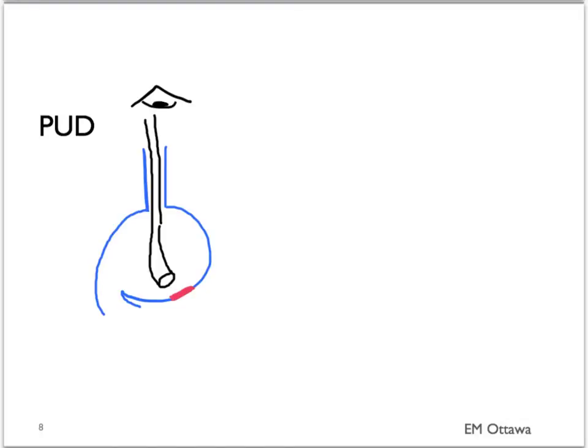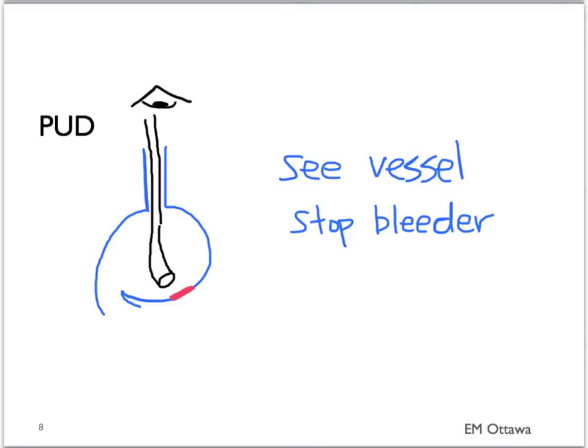In peptic ulcer disease, patients can bleed quickly. The main treatment for a bleeding ulcer is treatment during endoscopy, which allows you to identify the bleeding vessel. Multiple types of treatment can be used during endoscopy to achieve hemostasis. In terms of medical treatment, a proton pump inhibitor may be given. If the patient develops a surgical abdomen because the ulcer has perforated, surgery should be consulted.